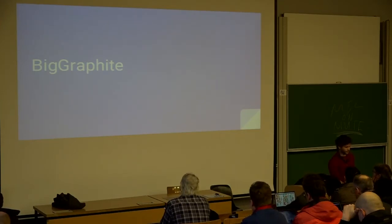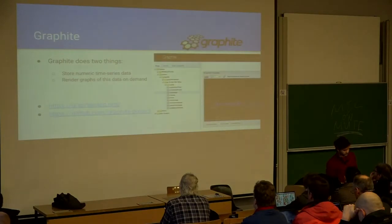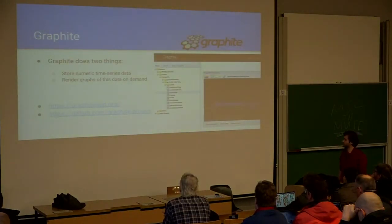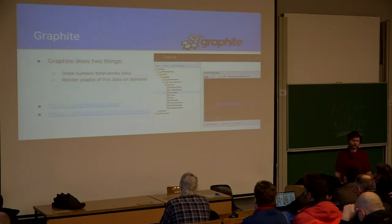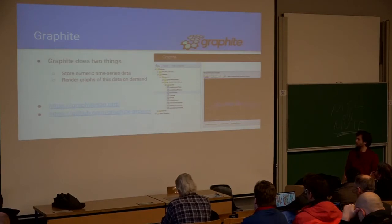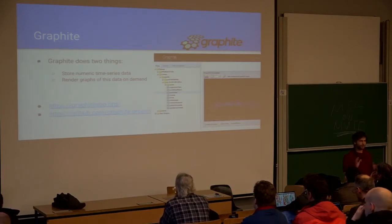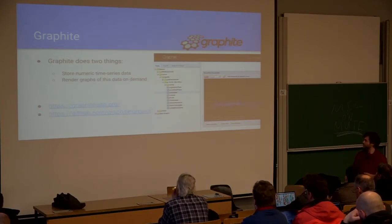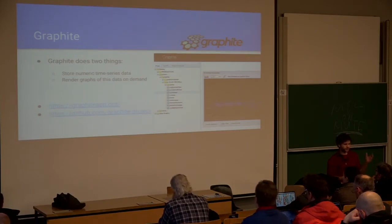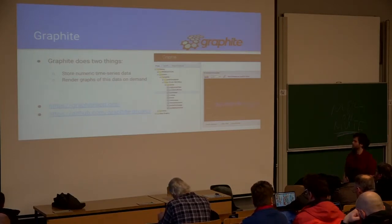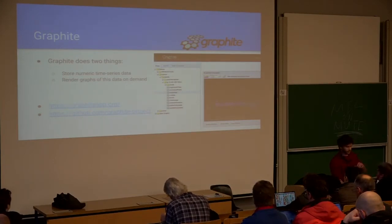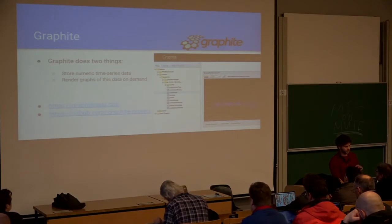As you might have realized, Graphite is a nice tool when you just want to get a few metrics from a couple of servers or applications. Given a small set of metrics, you can browse and display graphs. You can use Graphite on top of it to build dashboards. How does it work internally? It's important to understand that to follow the rest.